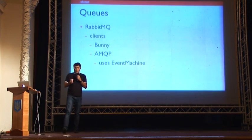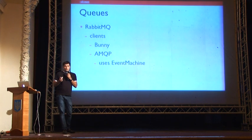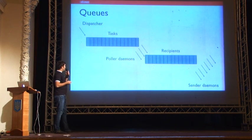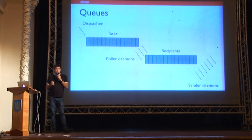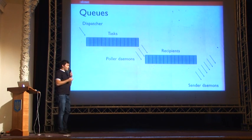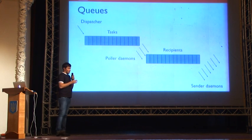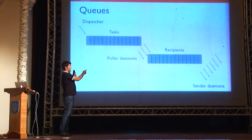Two RabbitMQ clients were used: Bunny, which is more reliable but synchronous, and AMQP, which is faster but asynchronous and based on EventMachine. The queue schema works as follows: we have a tasks queue, and tasks are packages of recipients. For example, a 100,000-email campaign is divided into tasks of 2,000 recipients each. Poller daemons extract tasks into a recipients queue, and then sender daemons send recipients to the MTA.